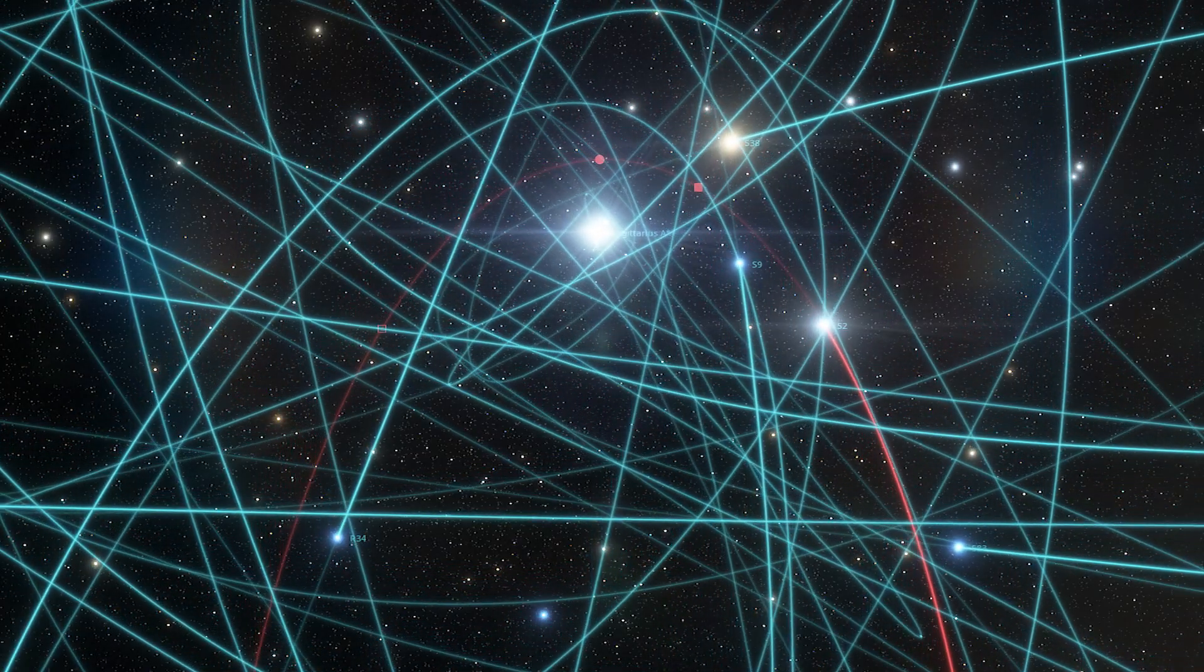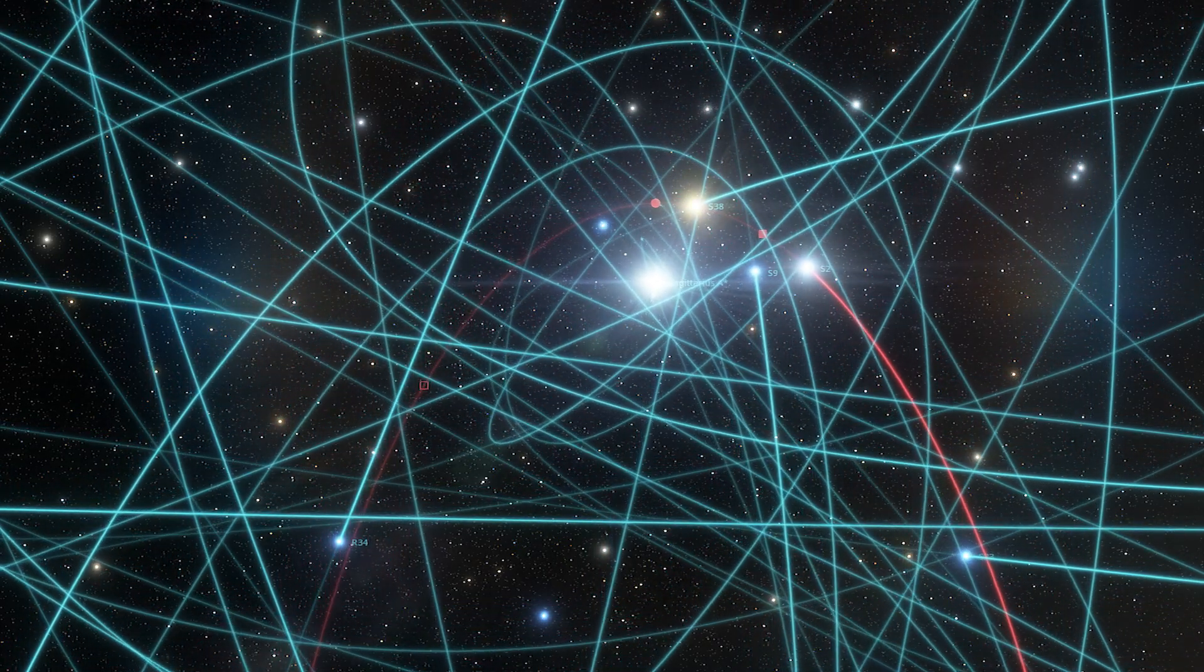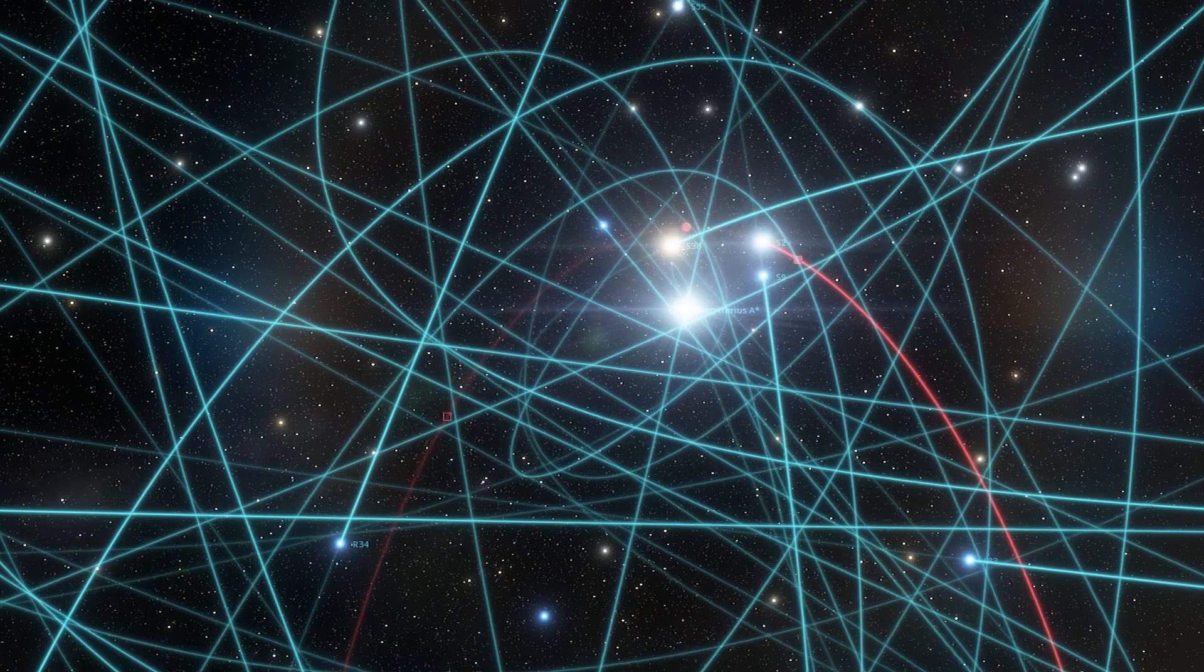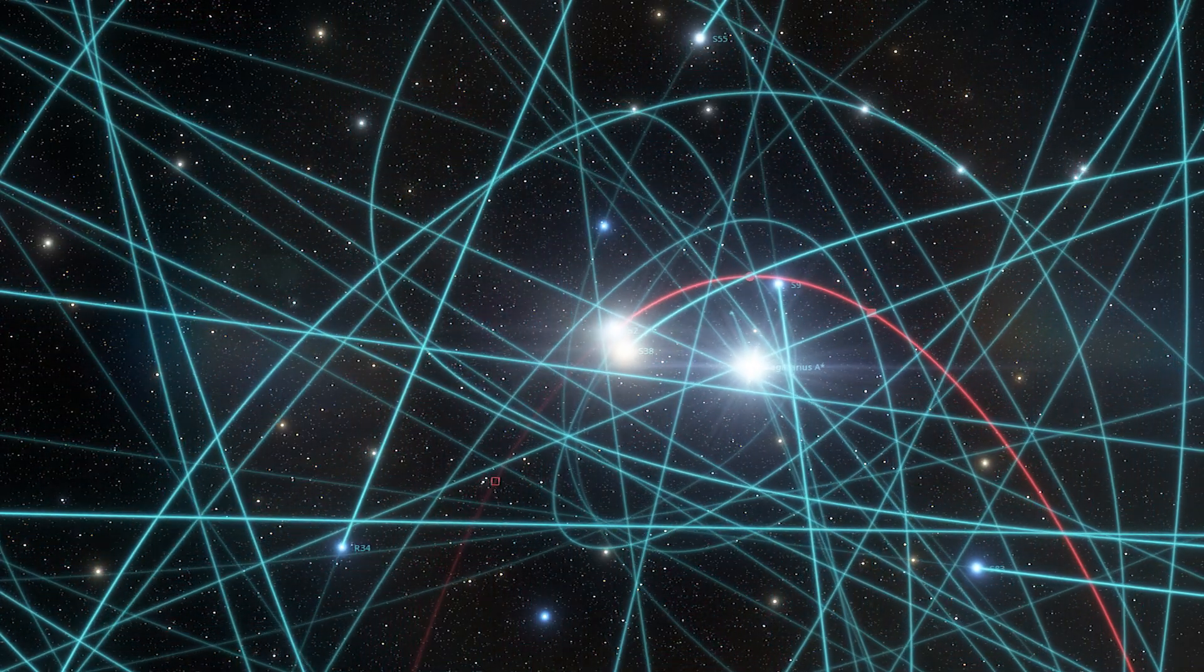Astronomers speculate that the flash was thrown out when a star known as S2 moved close to the black hole in 2018, disturbing gases at the event horizon enough to cause the flashing event.